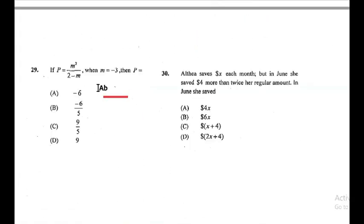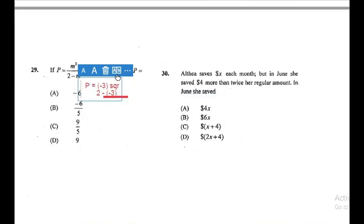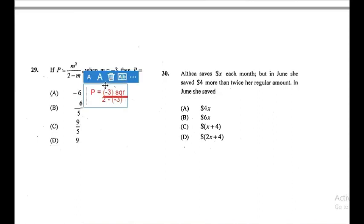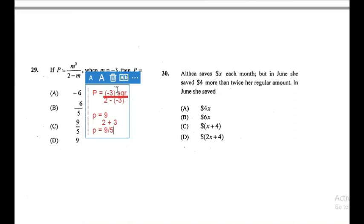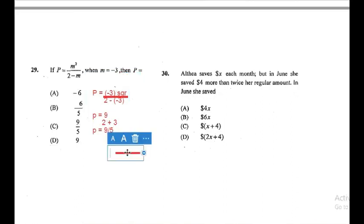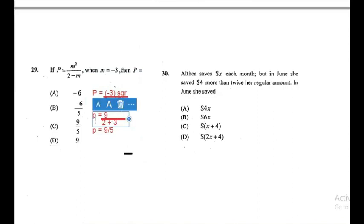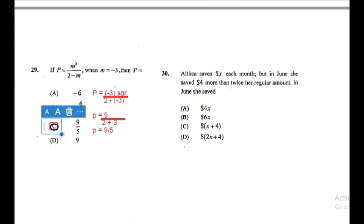Question 29: if P equals M squared divided by (2 minus M), where M equals negative 3, then P equals? We substitute negative 3 for M: P equals negative 3 squared divided by (2 minus negative 3). Negative 3 squared is 9, and 2 minus negative 3 becomes 2 plus 3 equals 5. So P equals 9 divided by 5.